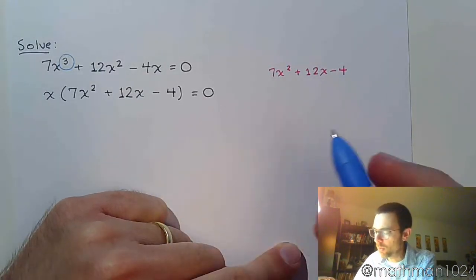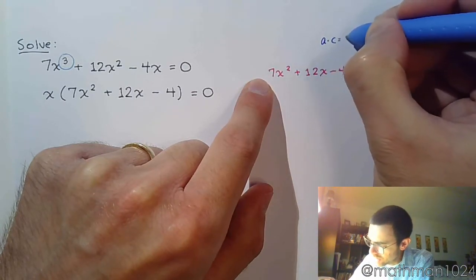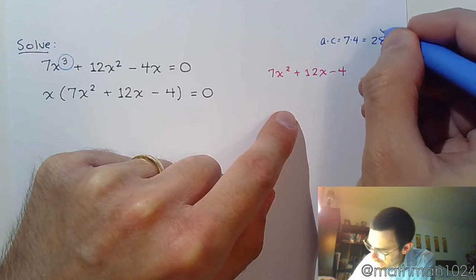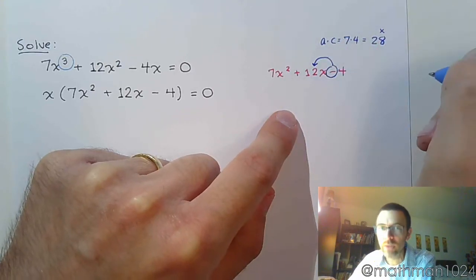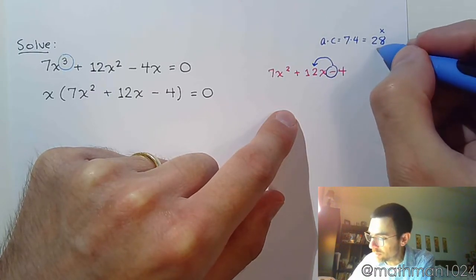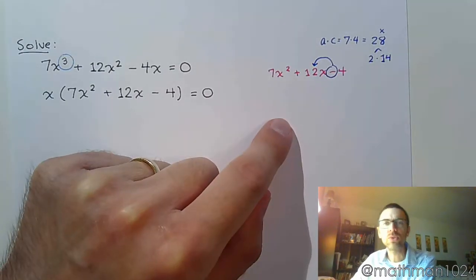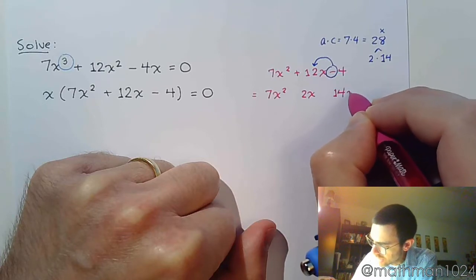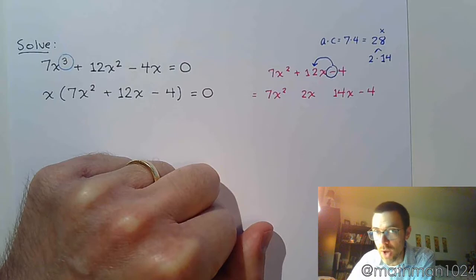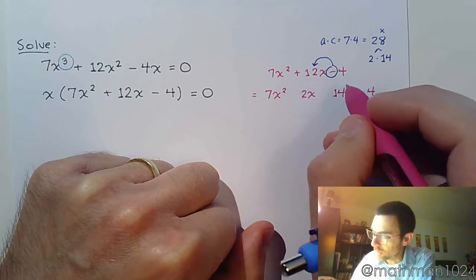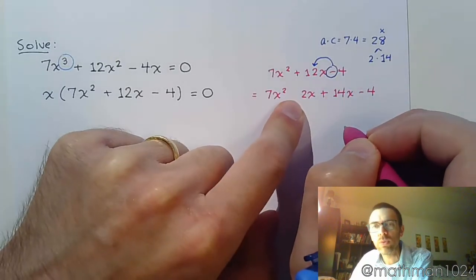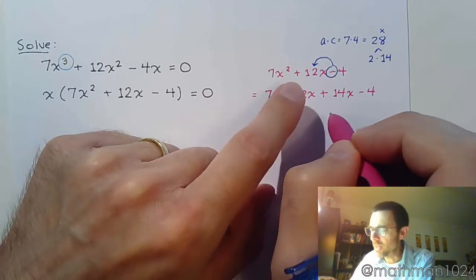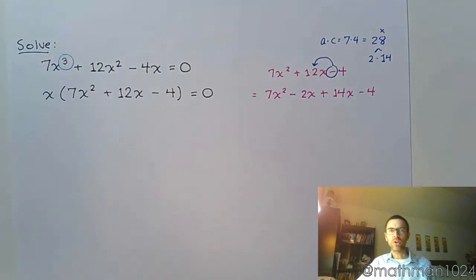Using the AC method: A times C is 7 times 4, and we get 28. I kind of ignore the sign until the very end, because I'm trying to find factors of 28 that are going to subtract to give me 12. Those factors of 28 that have a difference of 12 are 2 and 14, and those are the numbers I'll use to split up the middle term. So this becomes 7x squared, minus 2x, plus 14x, minus 4. Make sure you address the sign issue right away — to get a positive 12x in the middle, the larger of the two numbers must be positive. The 2 needs to be negative, because a negative times a positive gives you a negative, which works once we do the factoring.